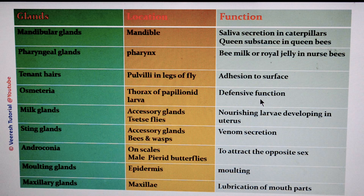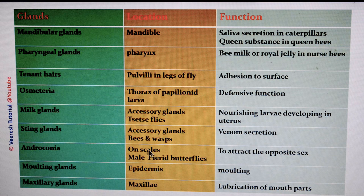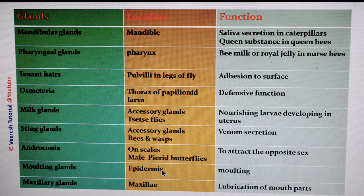Milk glands are modified accessory glands present in tsetse flies, involved in nourishing larvae developing in the uterus. Sting glands are modified accessory glands present in bees and wasps that secrete venom. Androconia are scented scales present in male pierid butterflies, involved in attraction of the opposite sex. Moulting glands are present in the epidermis and help in secretion of moulting fluid. Maxillary glands are present on the maxillae and are involved in lubrication of mouthparts.